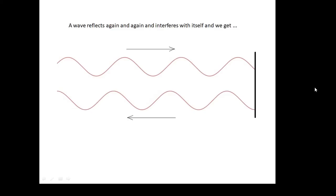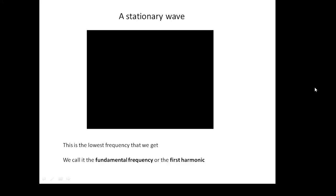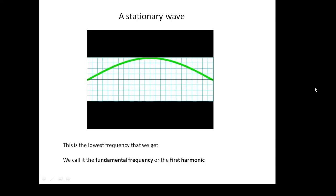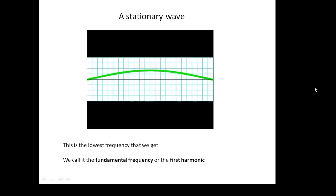What happens is that waves travel up and down the length of the string and reflect when they get to the ends. You've got waves interfering with their own reflection, producing constructive interference, and we get a stationary wave. The lowest frequency we get is called the first harmonic, or the fundamental frequency.